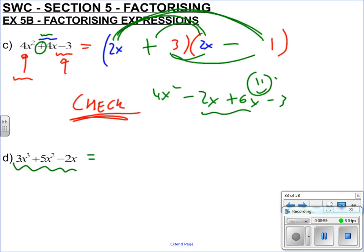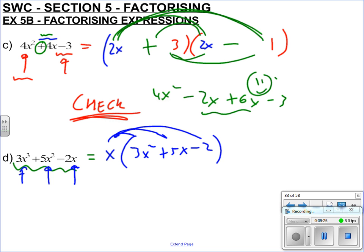Now this links with part a — we need to factorise a cubic. Do they all have something in common? Yes — they all have an x, not x squared or x cubed, but they all have an x. So I can take x out as a factor. Inside the bracket I need: what times x gives 3x cubed? That's 3x squared. Then plus 5x and minus 2. So I've got x on the outside, and now I need to factorise that bigger bracket.